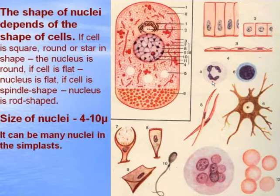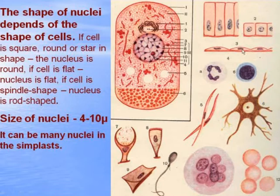The shape of the nucleus depends on the shape of the cell. If the cell is square, round, or star-shaped, the nucleus is round. If the cell is flat, the nucleus is also flat. If the cell is spindle-shaped, the nucleus is rod-shaped. The size of nuclei varies between 4 and 10 microns.